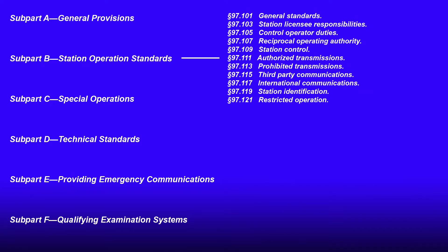Subpart B: Station Operation Standards, consisting of general standards, station licensee responsibility, control operator duties, reciprocal operating authority, station control, authorized transmission, prohibited transmission, third party communications, international communications, station identification, and restricted operation.